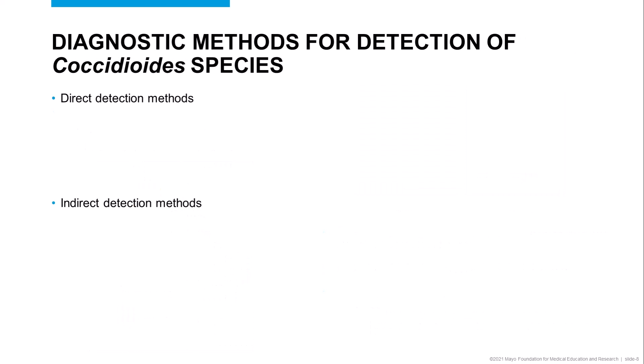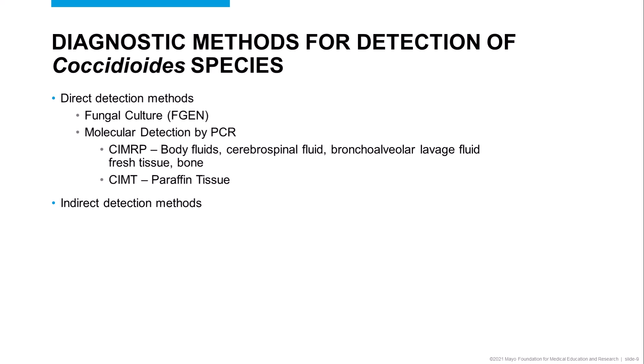When it comes to the diagnosis of coccidioidomycosis, it often takes a multi-pronged approach, including the use of both direct and indirect detection methods. Direct detection methods include culture and molecular testing, both of which are available through Mayo Clinic laboratories. While these diagnostic strategies offer definitive evidence of infection, there are a number of limitations to be cognizant of, including the longer turnaround time associated with culture, primarily due to the time it takes for the organism to grow. When it comes to molecular testing, sensitivity can be variable depending on the specimen type and the extent of disease.